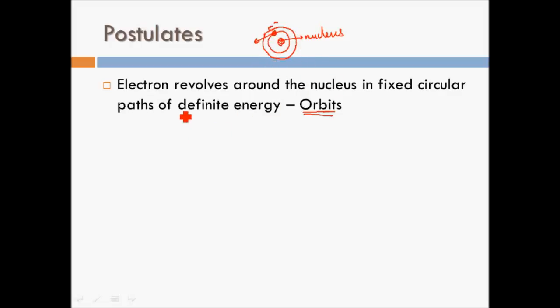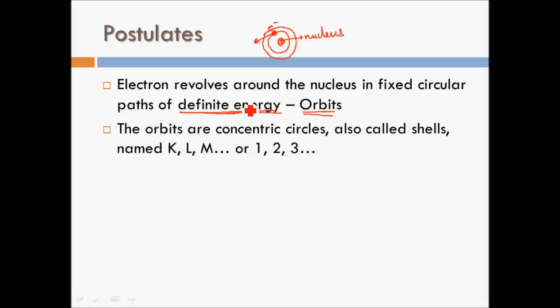An important point is that the electron revolves in an orbit of definite energy — meaning the energy of the orbit in which the electron is revolving is fixed. This is very different from Rutherford's postulate, which didn't address energy of orbits at all. Bohr is saying the energy of the orbit is fixed. These orbits are also called shells, named K, L, M, and so on.